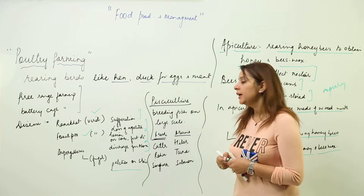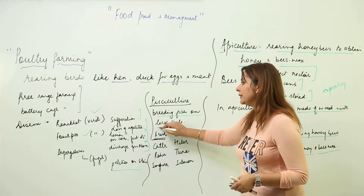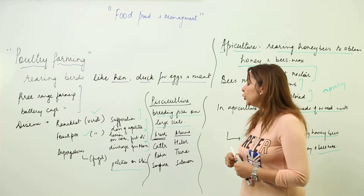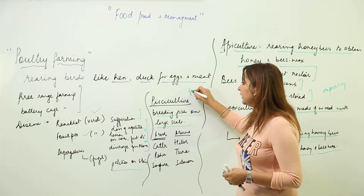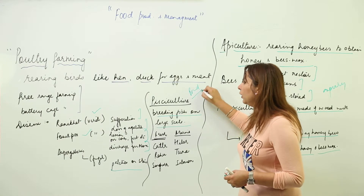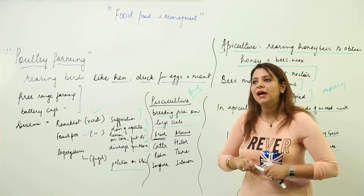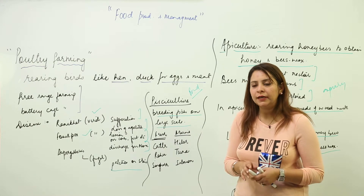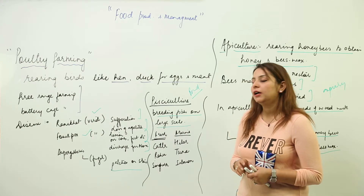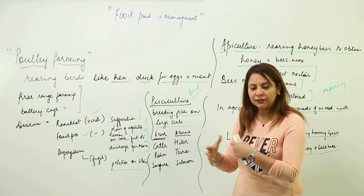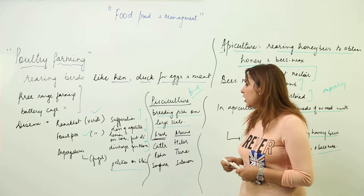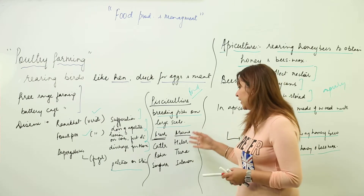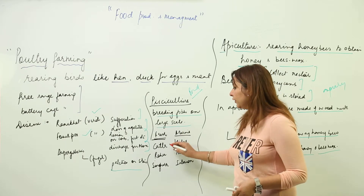Moving on to pisciculture — it means breeding fish on a large scale. Pisciculture is best done in a pond. In the pond, we supply fish with food supplemented with all the nutrients they need, and then the fish are reared on a large scale. We have both freshwater fish and marine water fish.